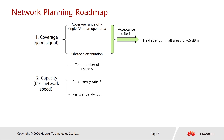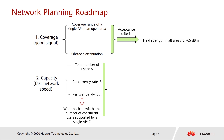With the total number of users and the concurrency rate, we can calculate the number of APs meeting the capacity requirement in the area. We will adopt the larger value between AP quantities meeting the coverage and capacity requirements respectively. In most cases, the number of APs for the capacity requirement is greater than or equal to that for the coverage requirement. Next, let's check the factors one by one.